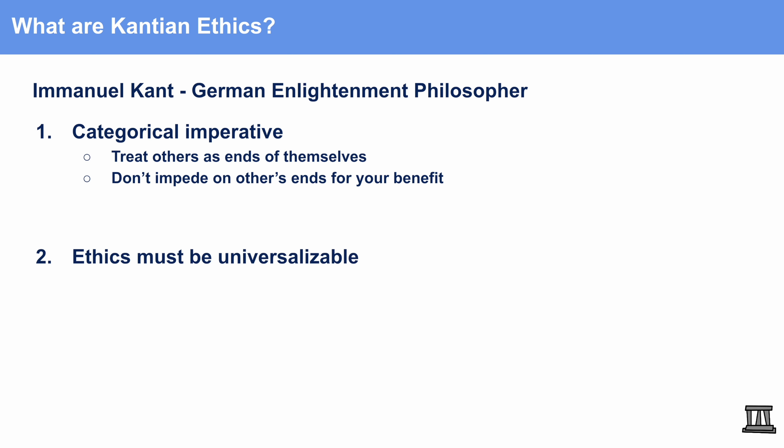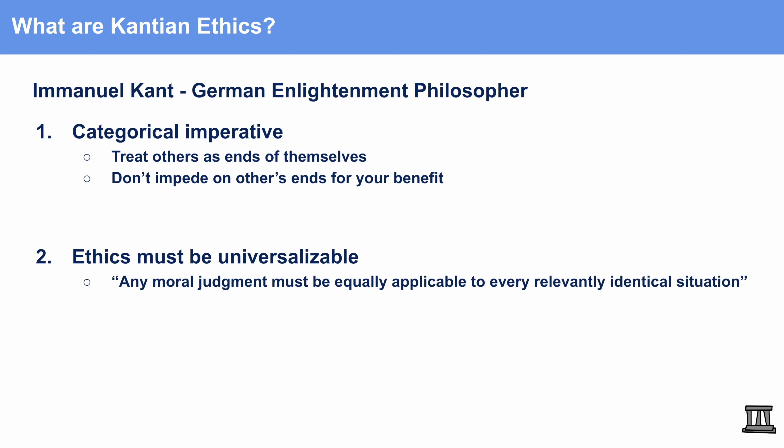The second broad part of Kantian ethics is that ethics must always be universalizable. Universalizability means that any moral judgment must be equally applicable to every relevantly identical situation. For example, under Kant, murdering is bad because if you universalize that action — meaning that if everyone on the entire earth were able to murder another person — that would be obviously bad.